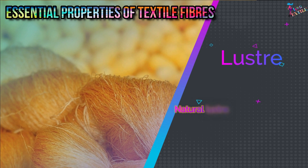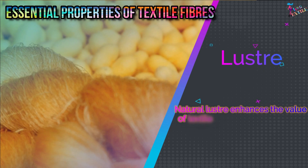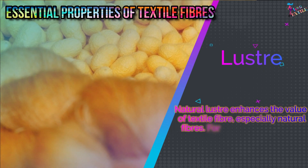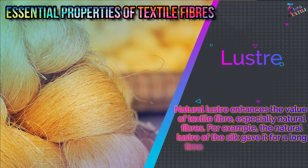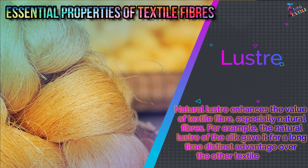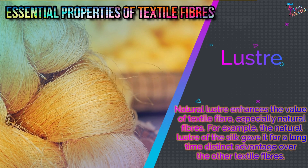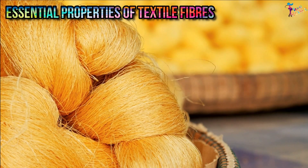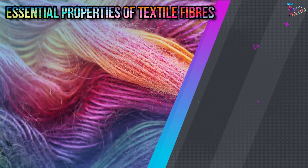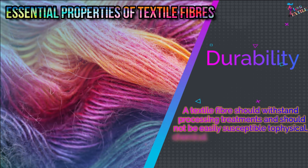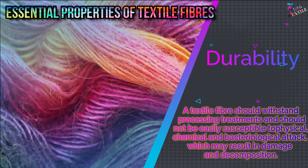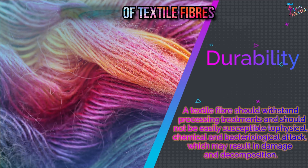Natural luster enhances the value of textile fibers, especially natural fibers. For example, the natural luster of silk gave it a long-time distinct advantage over other textile fibers. Durability means a textile fiber should withstand processing treatments and should not be easily susceptible to physical, chemical, and bacteriological attack, which may result in damage and decomposition.